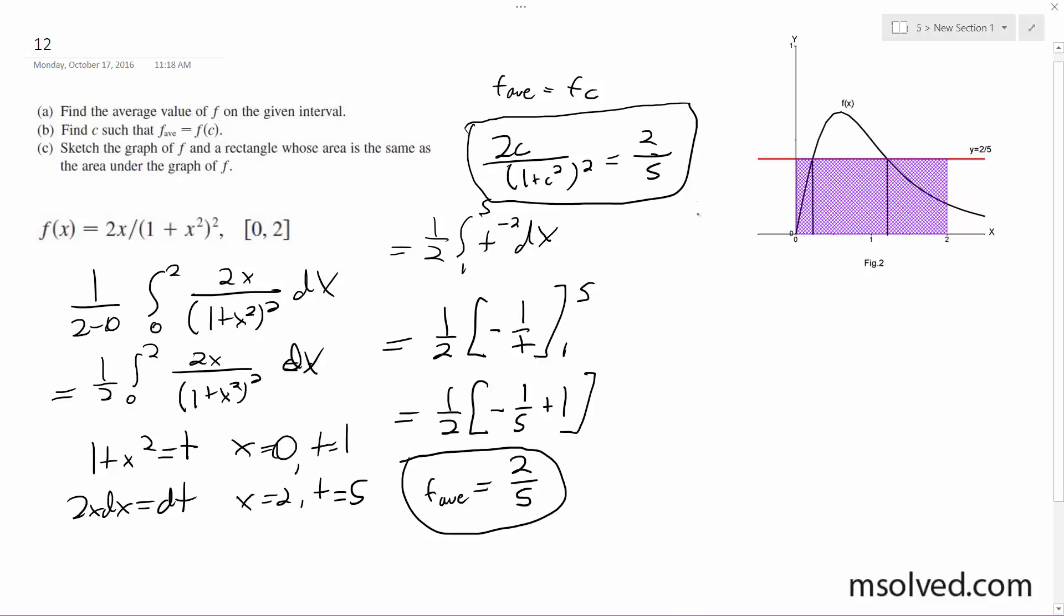For part c, sketch the graph of a rectangle whose area is the same as the area under the graph of the curve. It's pretty much just this.